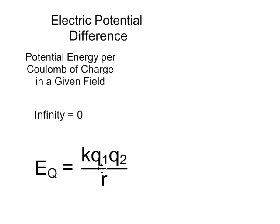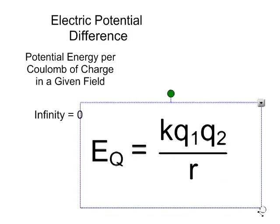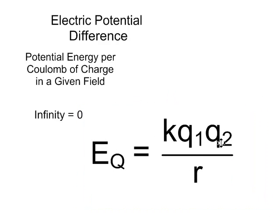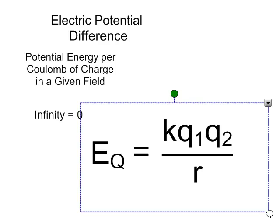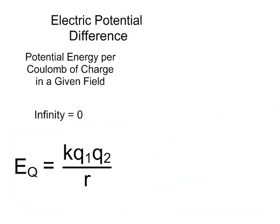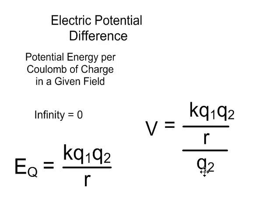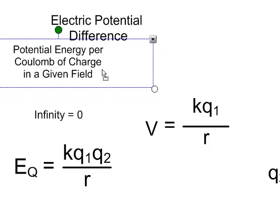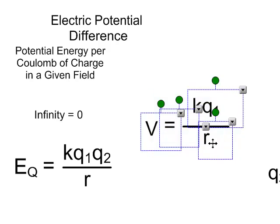So there's my potential energy equation, and in this case, it depends on two charges of any size. Really, when I'm talking about electric potential difference, I'm talking about a single charge of one coulomb. And so I just have to modify this equation a bit. And now instead of having Q2, I'm going to be measuring this in terms of joules per coulomb. And so I'm going to divide by Q2, and those are going to cancel. And there is my equation for electric potential energy.